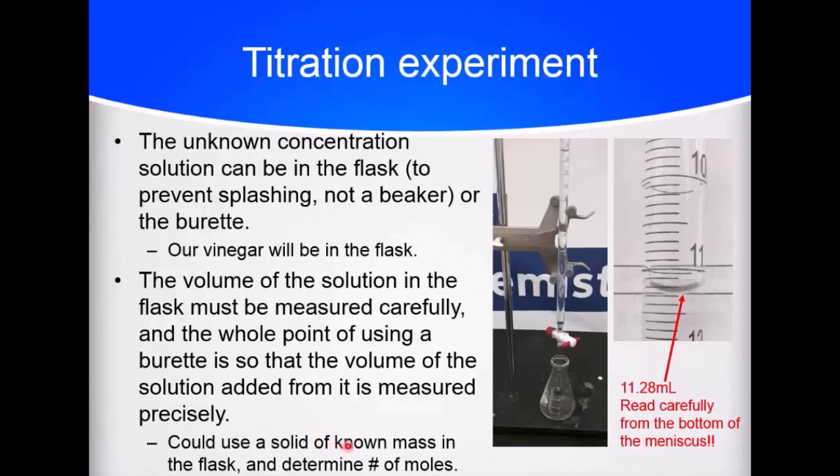Sometimes what you're titrating it with is a solid, and so you just weigh it to determine the number of moles. You don't have to do molarity times volume to get number of moles. You can just weigh it and get grams to moles. Regardless, we have to know the identity of everything involved in our equation because we have to know the equation. We have to be able to know how many moles of reactant 1 reacts with however number of moles of reactant 2.